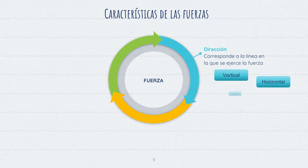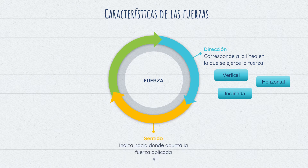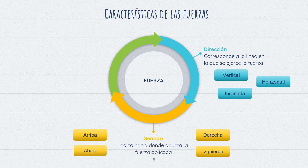La dirección corresponde a la línea en la que se ejerce la fuerza; me refiero a si es una línea vertical, horizontal o más bien inclinada. En segundo lugar, encontramos el sentido, que era el encargado de indicar hacia dónde apunta la fuerza aplicada. En este caso, ocupamos conceptos como derecha, izquierda, arriba, abajo.